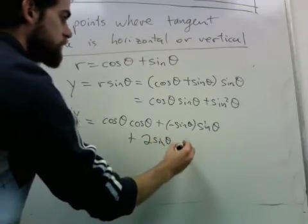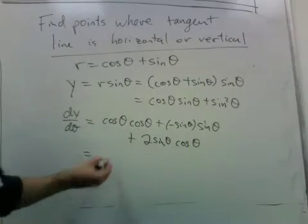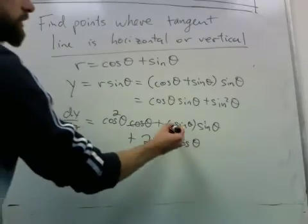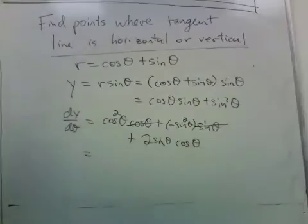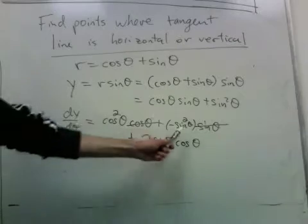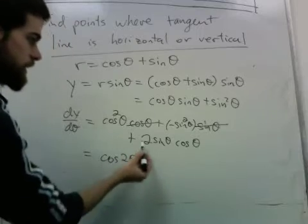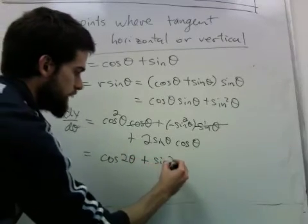You get 2 sine theta cosine theta. So this is really cosine squared and this is really negative sine squared. And again, cosine squared minus sine squared is cosine of 2 theta and 2 sine theta cosine theta is sine of 2 theta.